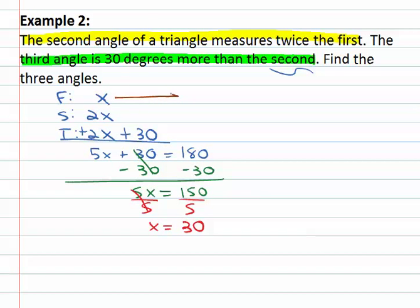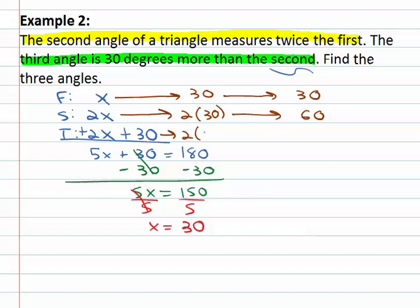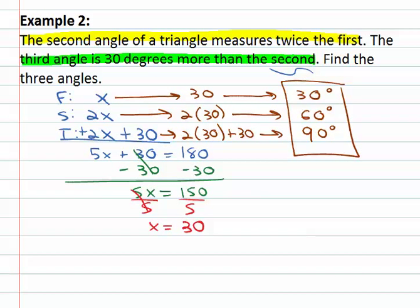So the first angle is just x, which is thirty. The second angle is 2x — two times thirty — which is sixty. The third angle is 2x plus thirty: two times thirty is sixty, plus thirty more is ninety. Our angles are thirty degrees, sixty degrees, and ninety degrees. The angles of a triangle add up to 180, so if we can represent each algebraically, we can quickly find the missing angles.